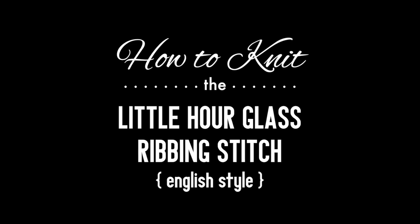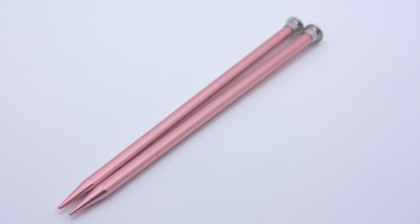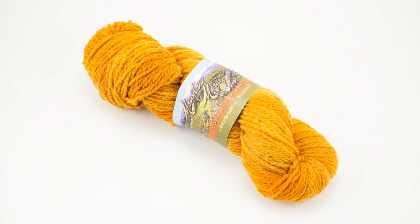How to knit the little hourglass ribbing stitch English style. For this tutorial you will need a pair of knitting needles and a ball of yarn. Special thanks to our sponsor Mountain Metal Wool for providing today's yarn. Today we are using their Laramie line in the color marigold.